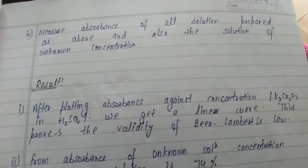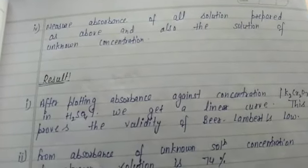Next step, procedure part four: measure absorbance of all solutions prepared as above and also the solution of unknown concentration. Next observation: this may have potassium dichromate.